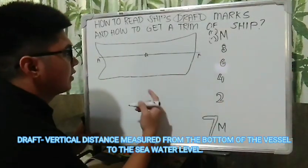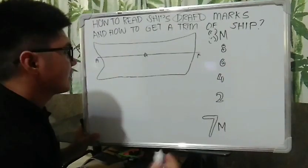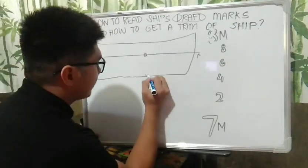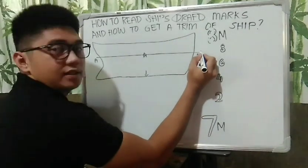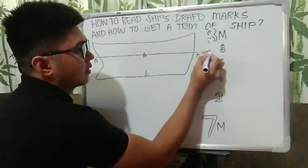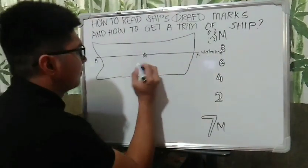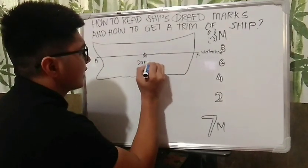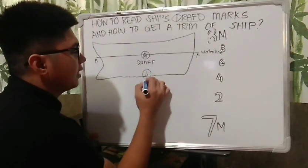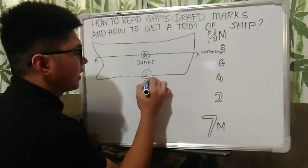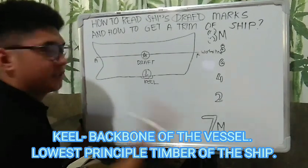Paano po yan? Ganito po siya. Sabi natin, vertical distance — kung sa Cartesian plane po siya, ito yung tinatawag nating y-axis. So, vertical distance from the bottom of the vessel to the seawater level — ito yung tinatawag nating waterline. Yung drop po natin is nasa pagitan ng seawater level and yung bottom of the vessel natin, particularly yung tinatawag nating keel — this is the backbone of the vessel.